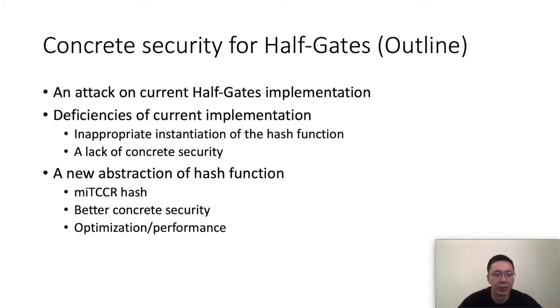In this paper, we gave a systematic study on the concrete security of the half-gate. First, I'll show an attack on the current half-gate implementations. Then I'll point out where the deficiencies are. It is directly caused by the inappropriate instantiation of the hash function based on fixed-key AES. Also, there is a lack of concrete security in previous papers. Mostly, they just focus on the asymptotic security bound. That's also a reason that people ignore this attack. At last, I'll give a new abstraction and construction of our hash function. It is called the multi-instance tweakable circular correlation robust hash function. I'll provide a new and better concrete security bound. At last, I'll show our implementations and its performance.